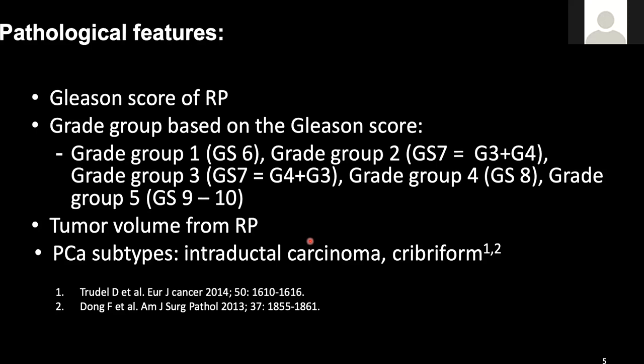In clinical practice it is challenging for pathologists to stratify borderline cases, because to differentiate grade groups one, two, three we need estimation of the percentage of Gleason grade four, and a similar situation applies to differentiating grade group four and five. Therefore it is recommended to have quantitative reporting of Gleason grade four and five. Additionally, although tumor volume reporting is not standard in clinical practice, most pathologists at the ISUP consensus meeting believe tumor volume is a very important feature to report and recommend quantitative reporting. There is also recent interest showing that intradactal carcinoma and cribriform G4 show different prognostic outcomes.